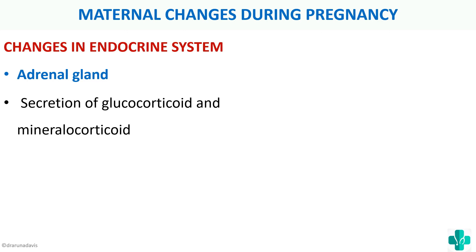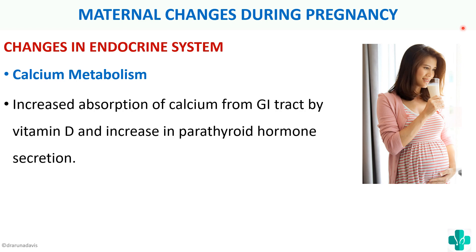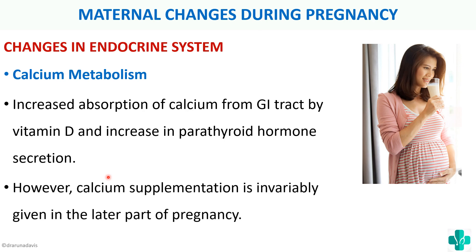The adrenal glands show increased secretion of glucocorticoids and mineralocorticoids. Regarding calcium metabolism, there is increased absorption of calcium from the GI tract via vitamin D and an increase in parathyroid hormone secretion. However, calcium supplementation is still given in the later part of pregnancy, because the growing fetus requires increased calcium and the natural increases are insufficient without supplementation.